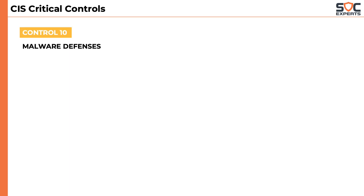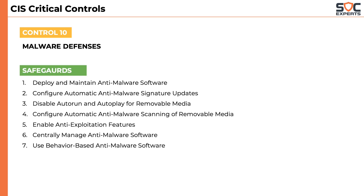The tenth control is malware defense. It goes without saying that any company should implement strong defense against malware attacks. This control has seven safeguards that explain use of anti-malware software and keeping it up-to-date with the latest signatures, restricting files from running from removable media, and using an endpoint platform to centrally manage all AV deployments.